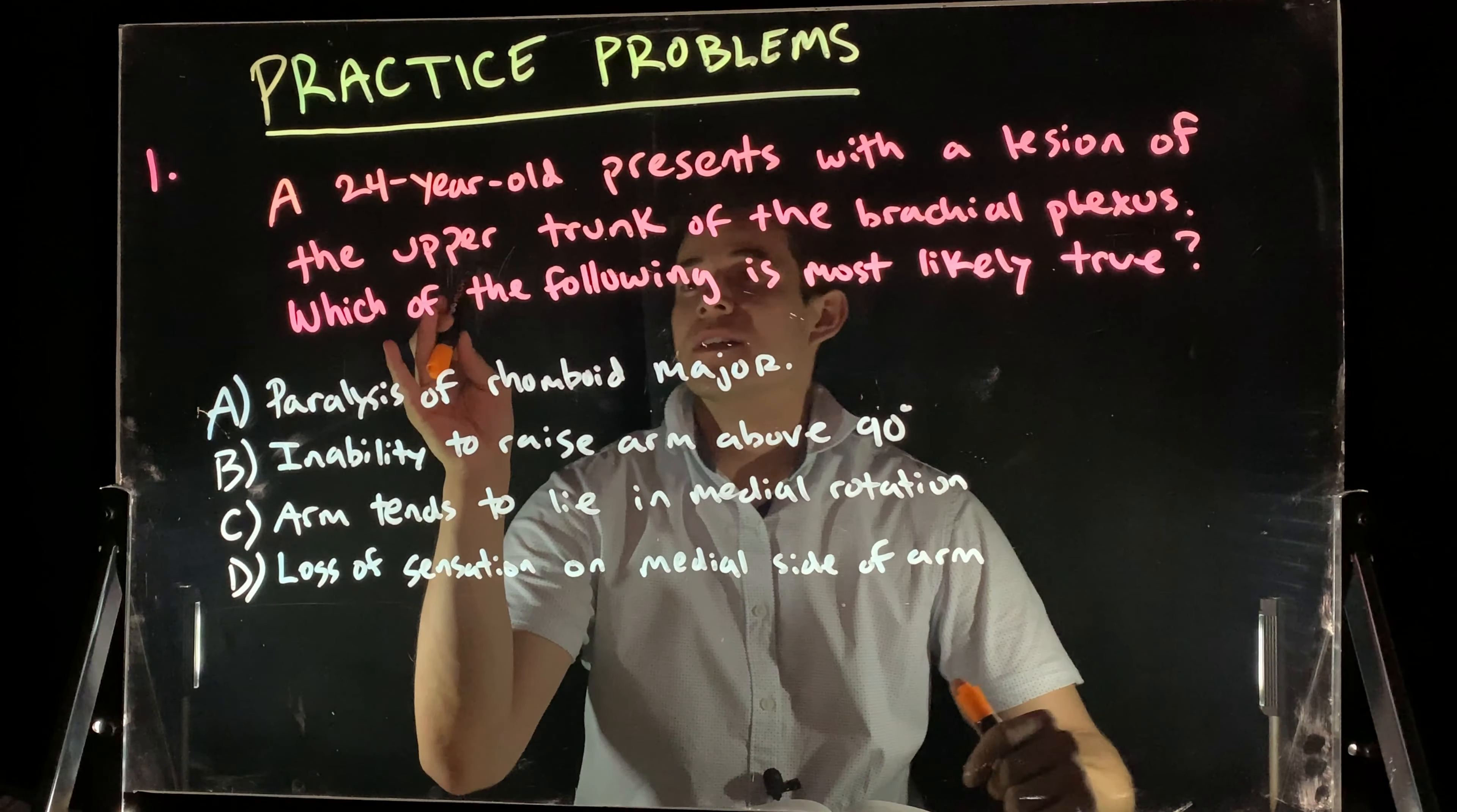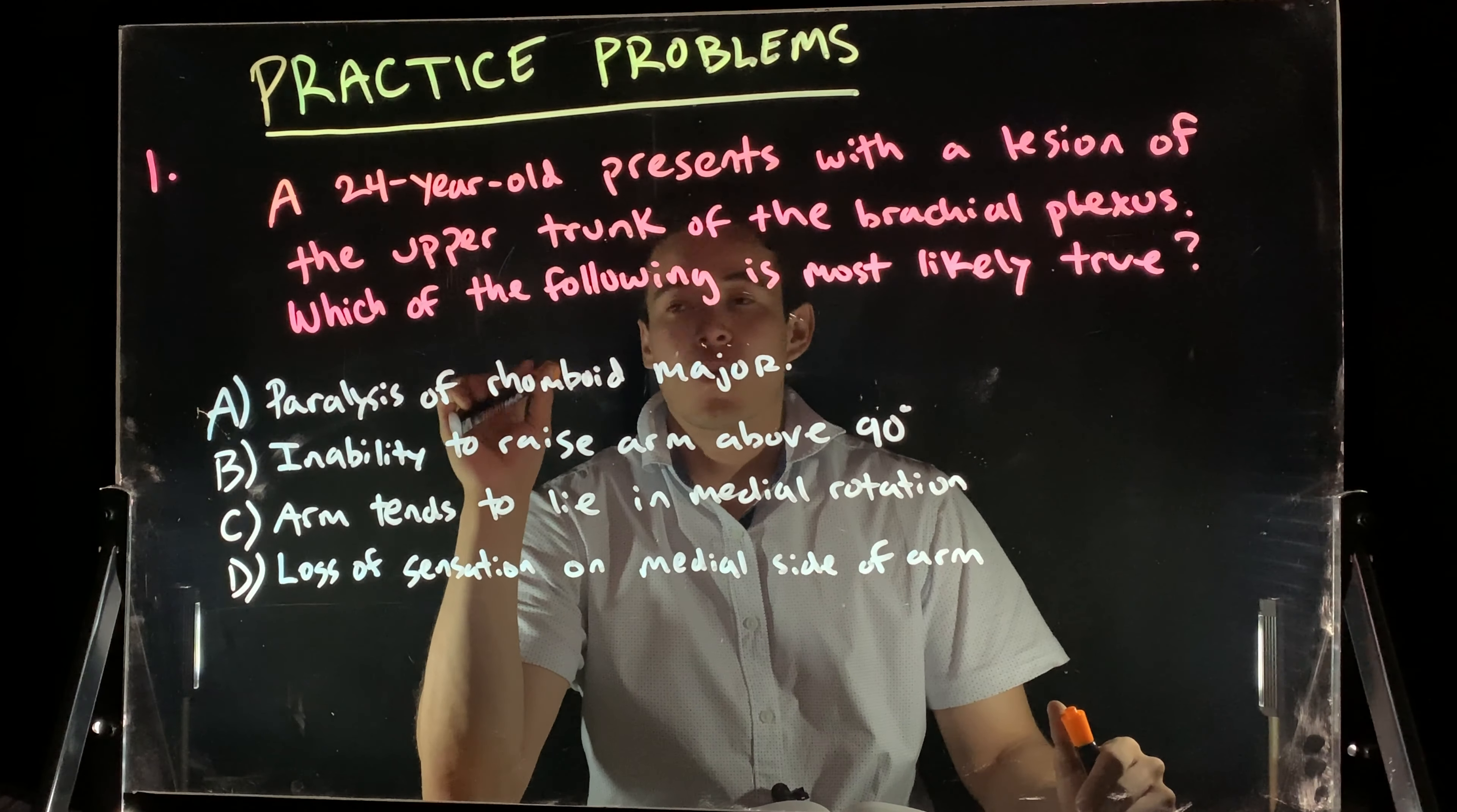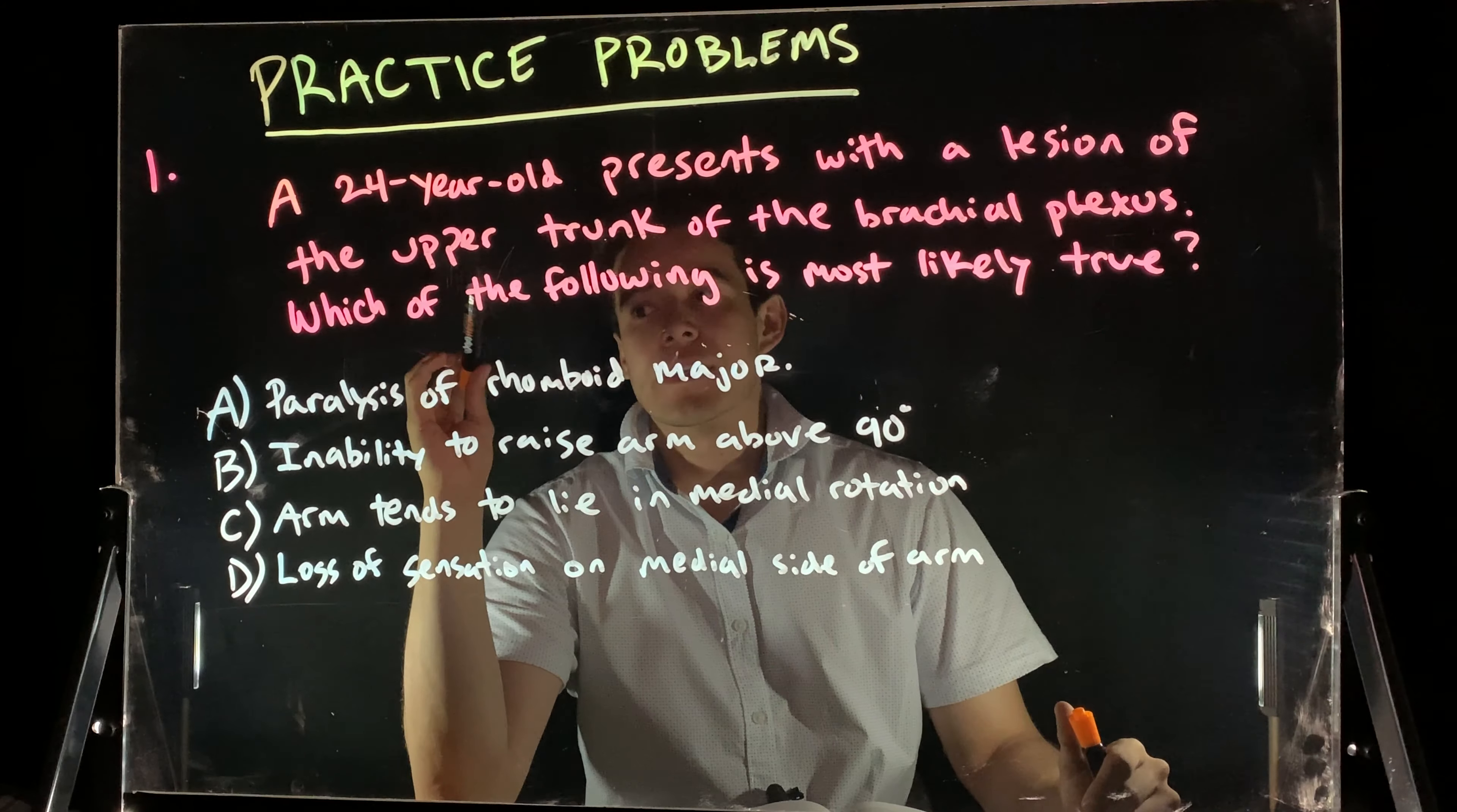Alright guys, so essentially what's going on here is we have a 24-year-old that presents with a lesion of the upper trunk of the brachial plexus. Which of the following is most likely true? Go ahead and pause the video and read over the answer choices and give it a try.